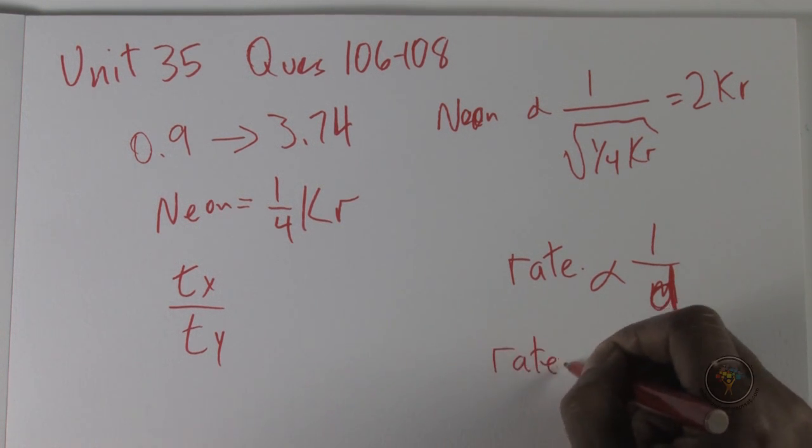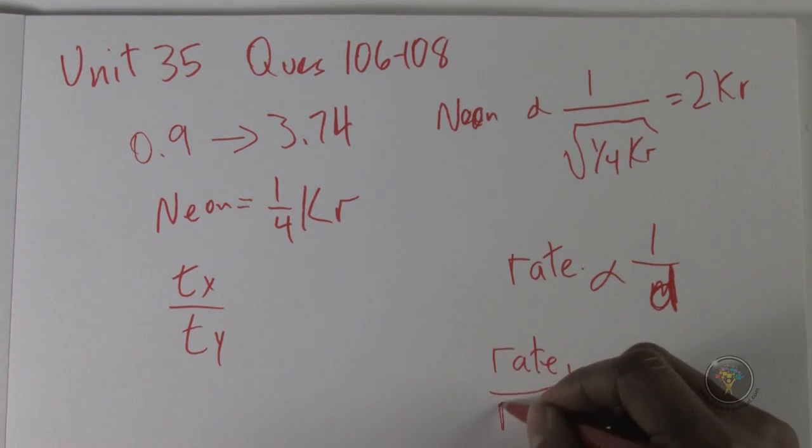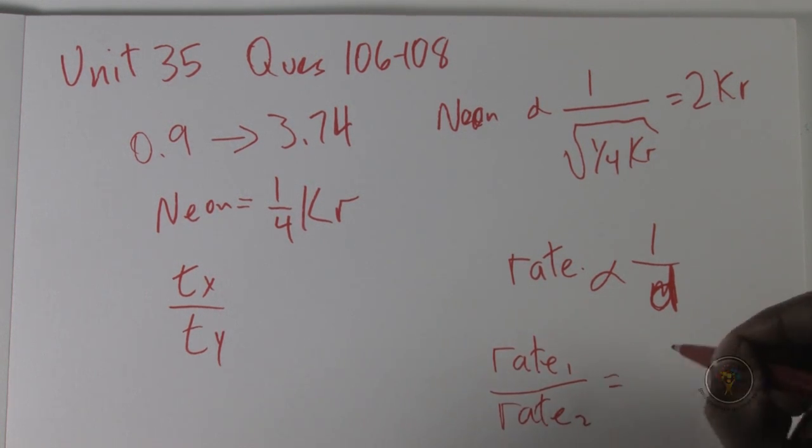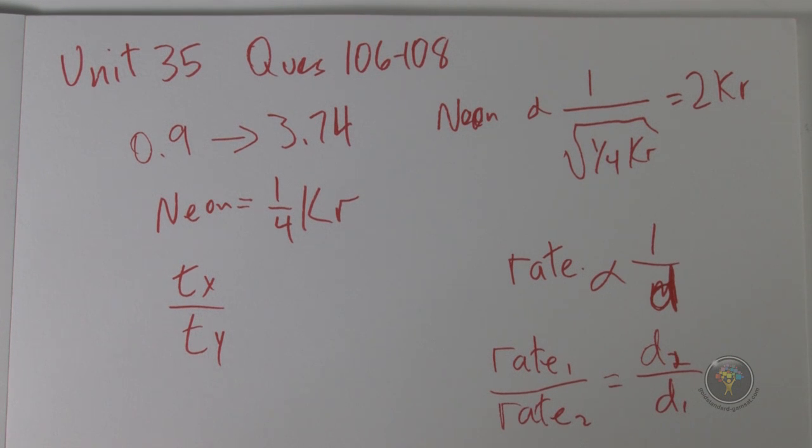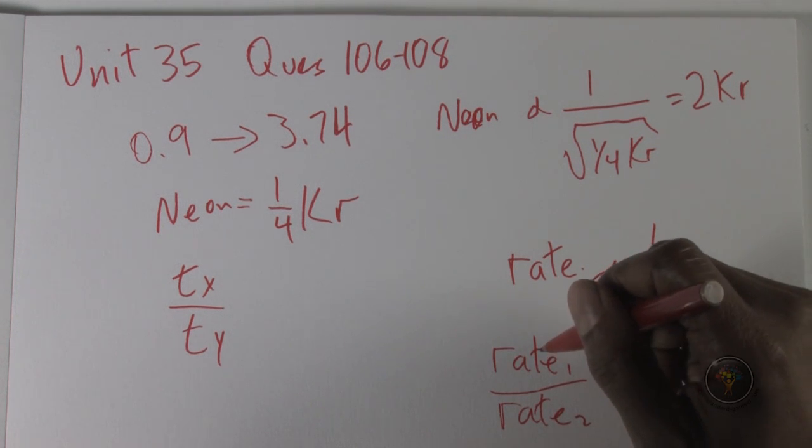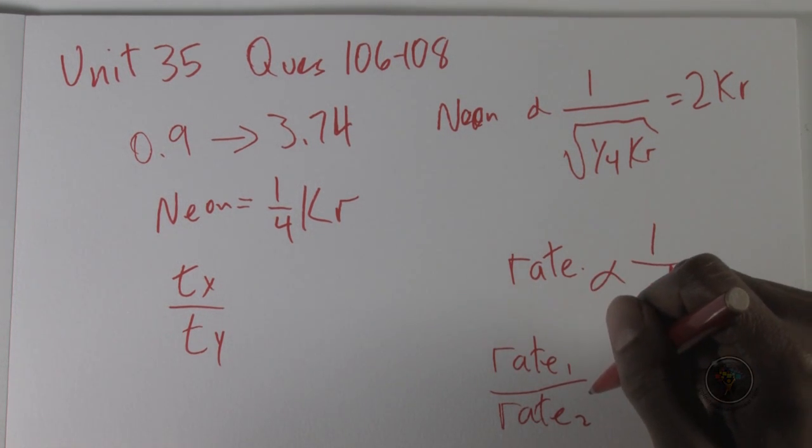So the rate is inversely proportional to density. What that means is that you can write that rate of one over the rate of another gas is equal to the density of this gas over the density of that gas.